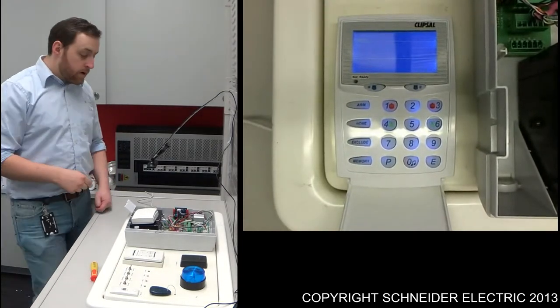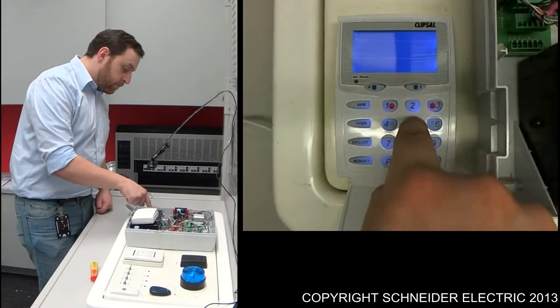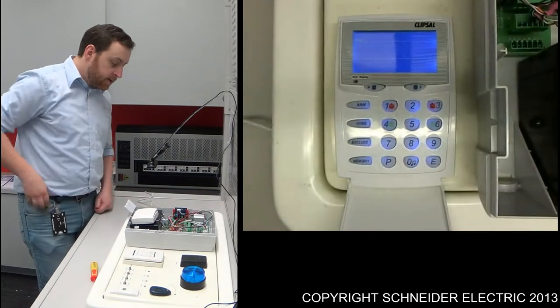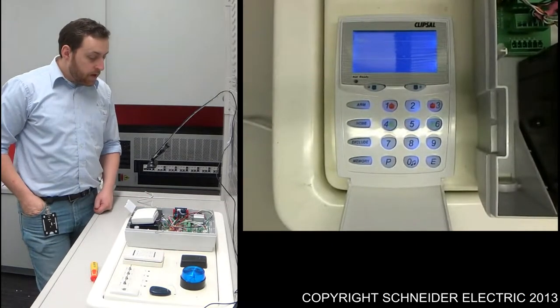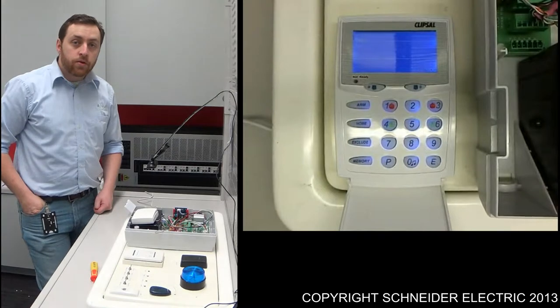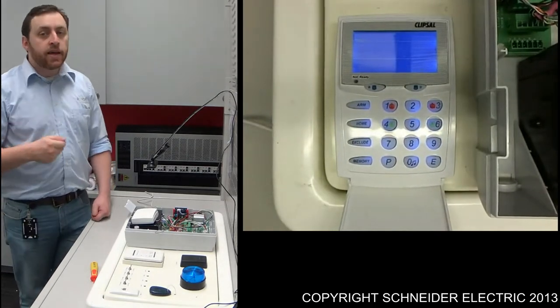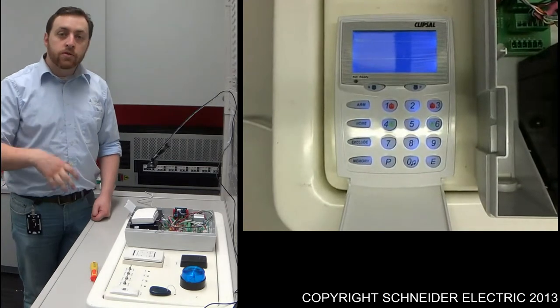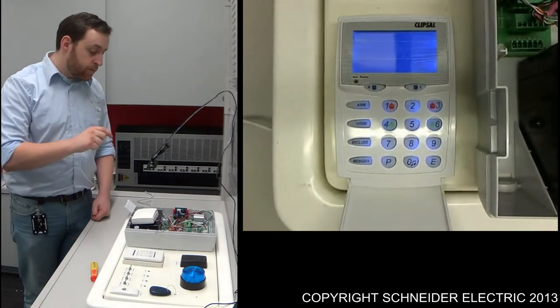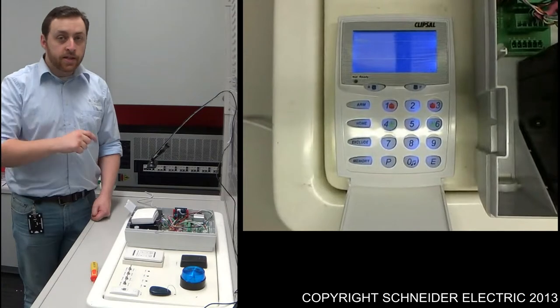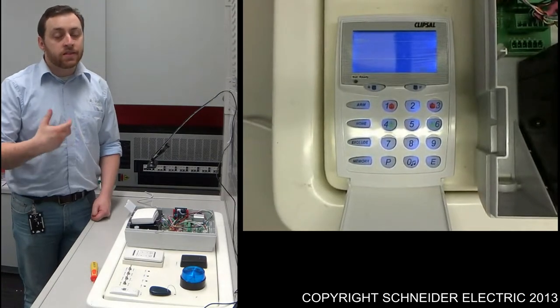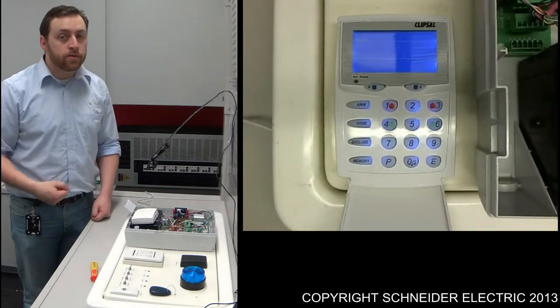I'm in program mode, I need to go P256E. Now there are no user codes currently programmed into this. I need to go into what's known as the extra options mode. If I wanted to program a user code, all I need to do is enter in a code, press E, enter that same code, press E, and that's a new user programmed into it.